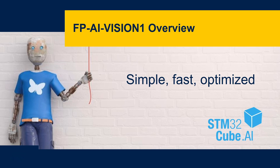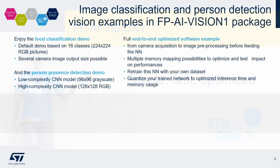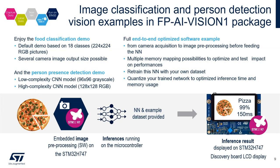Welcome back. This is the second video of the series. Let's have an overview of the FPAI Vision 1 function pack. FPAI Vision 1 is a STM32 Cube function pack featuring examples of computer vision applications based on convolutional neural network, and run on one of our high-performance STM32H7 MCUs.